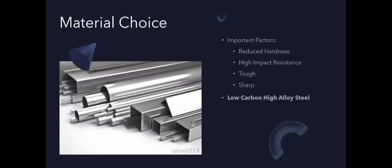Thus, the low carbon high alloy steel is stronger and softer than any other type of steel, making it the optimal choice of material for a lawnmower blade.